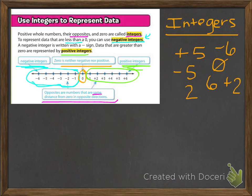This same distance from 0 is very important because we're going to talk about that more in the next section. Just get the idea that, for instance, positive 2 and negative 2 are both 1, 2 hops from 0.